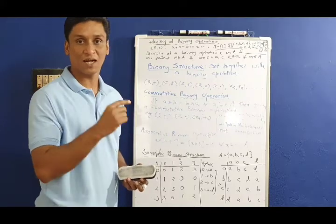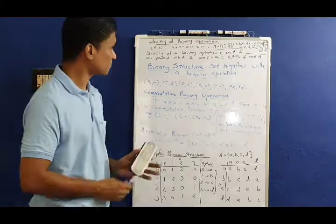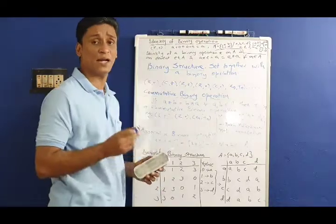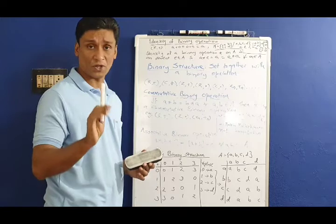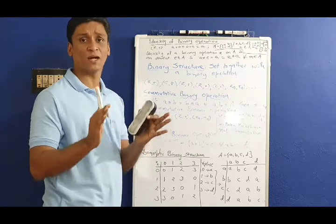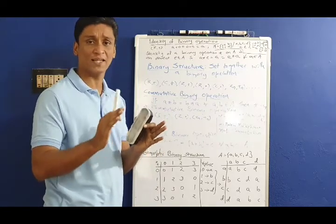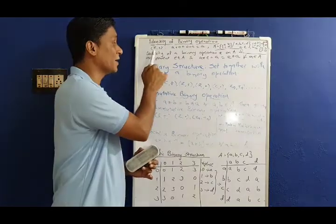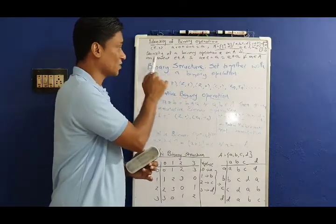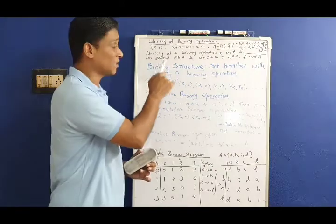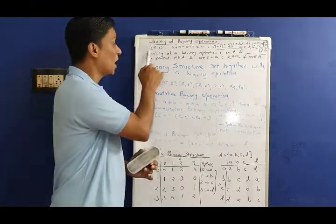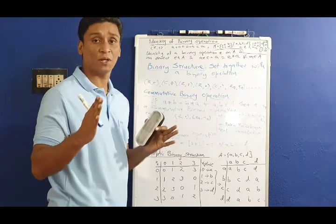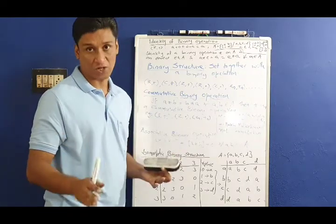What is the definition of a binary operation? In this example, the set of real numbers under addition is a binary operation. That is, when we add two real numbers, we get a real number. So R under addition is a binary structure. The set of real numbers with addition is a binary operation.